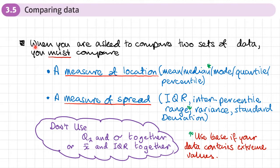So if you want to compare two sets of data, then you must compare a measure of location and a measure of spread. For example, measures of location: mean, median, mode, measures of central tendency - that's a measure of location - a quartile or a percentile.